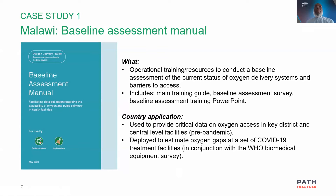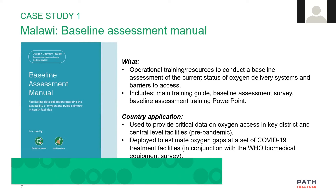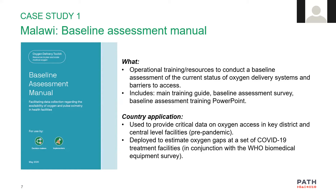I'm going to talk about the baseline assessment tool and specifically how it is used in Malawi to collect data on oxygen availability. There are actually three baseline assessment resources in the oxygen delivery toolkit. The first is the baseline assessment manual, which provides operational training for those involved in conducting a baseline assessment of the current status of the oxygen delivery system, as well as pulse oximetry and other barriers to access.